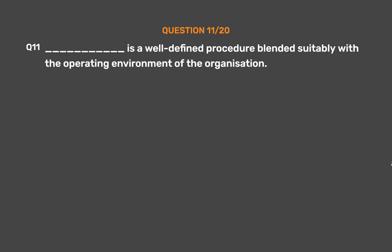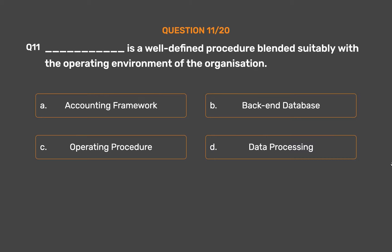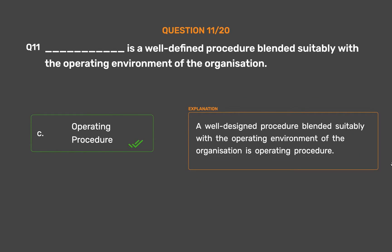Question number 11. Underscore is a well-defined procedure blended suitably with the operating environment of the organization. Option A: Accounting framework. Option B: Backend database. Option C: Operating procedure. Option D: Data processing. The correct answer is Option C — Operating procedure. A well-designed procedure blended suitably with the operating environment of the organization is operating procedure.